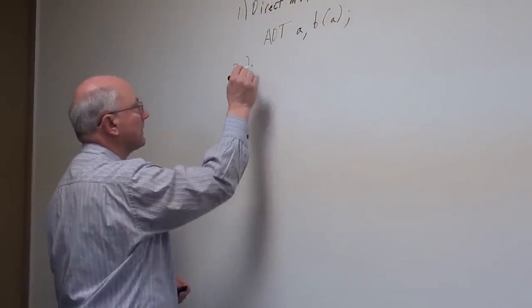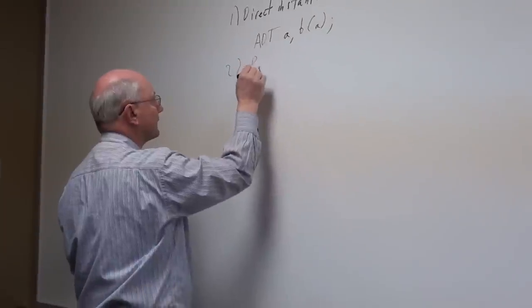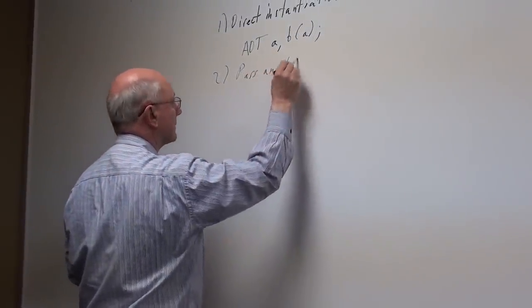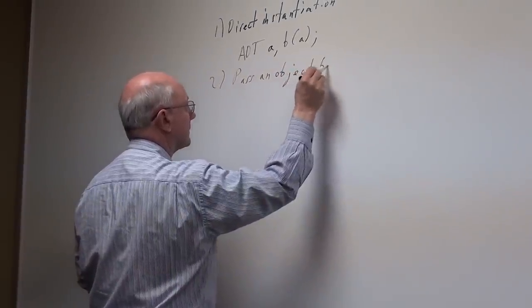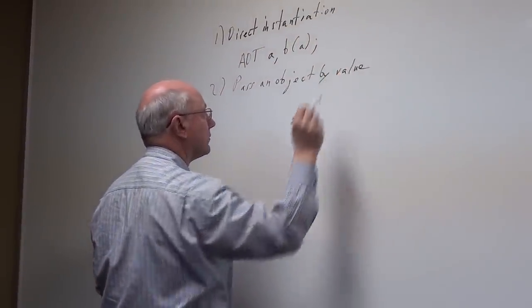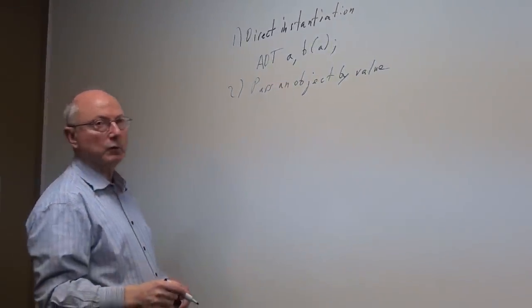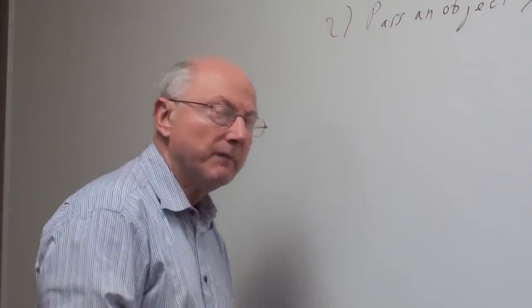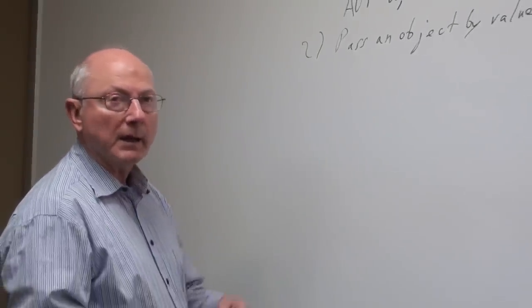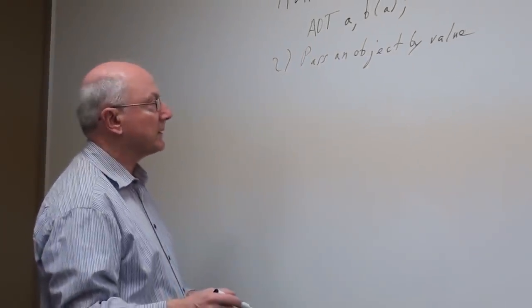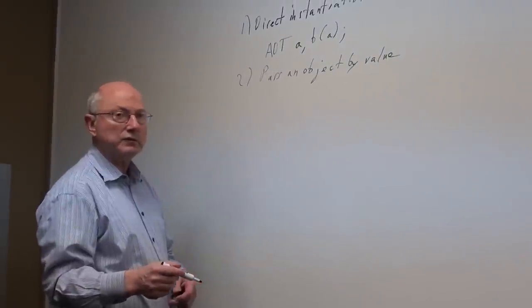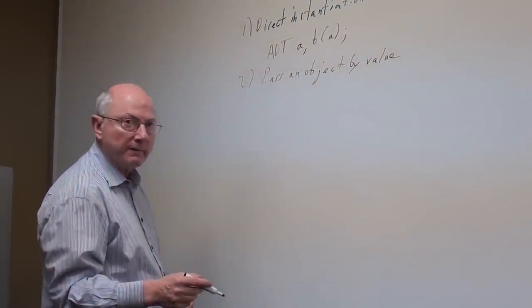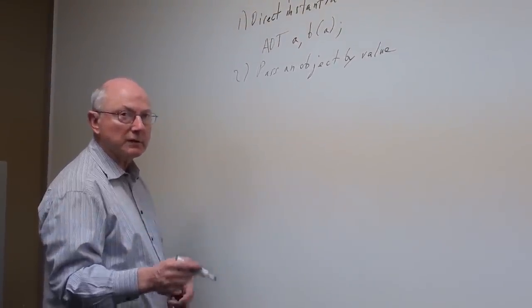Now, the second situation is calling a function and passing an object by value. This is very similar to the way the C language works when you pass primitive types by value. That is, a copy of the value gets made, hence the term copy constructor. In this case, the object being passed is a user-defined type, and to make a copy of that object as it comes into the function, the copy constructor gets called.